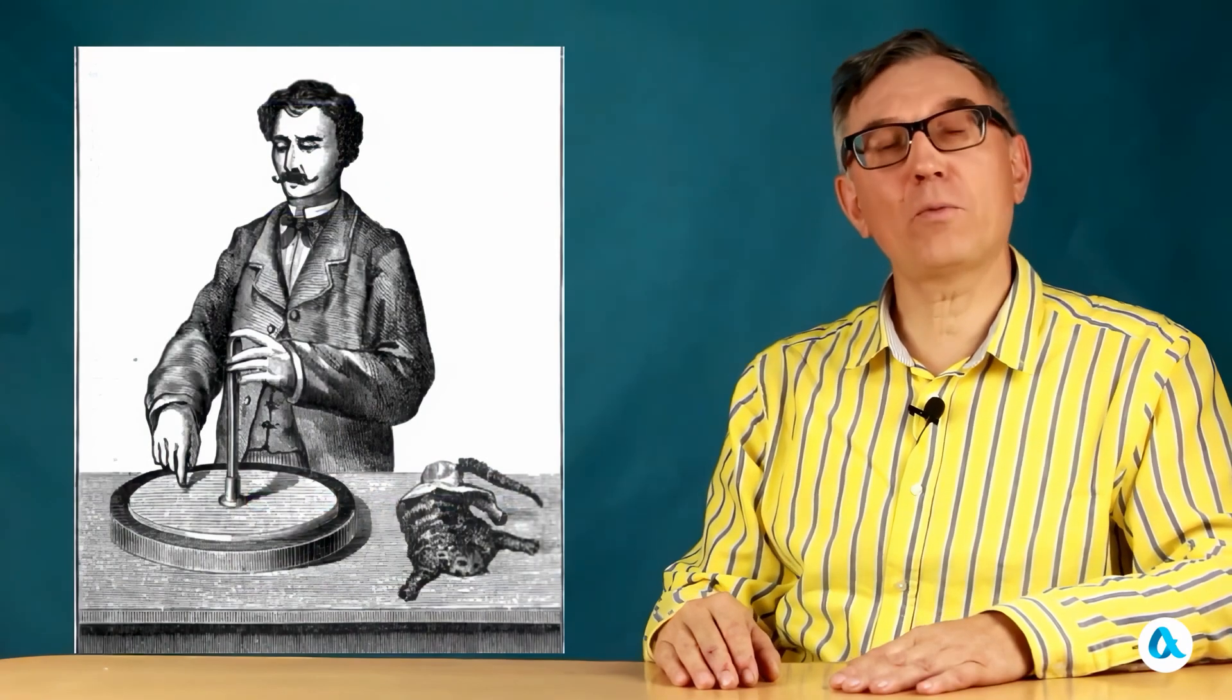This device is called an electrophorus, which means electricity carrier. It was invented in the 18th century and improved by Alessandro Volta. And its main advantage is that it allows for the transfer and accumulation of charges.